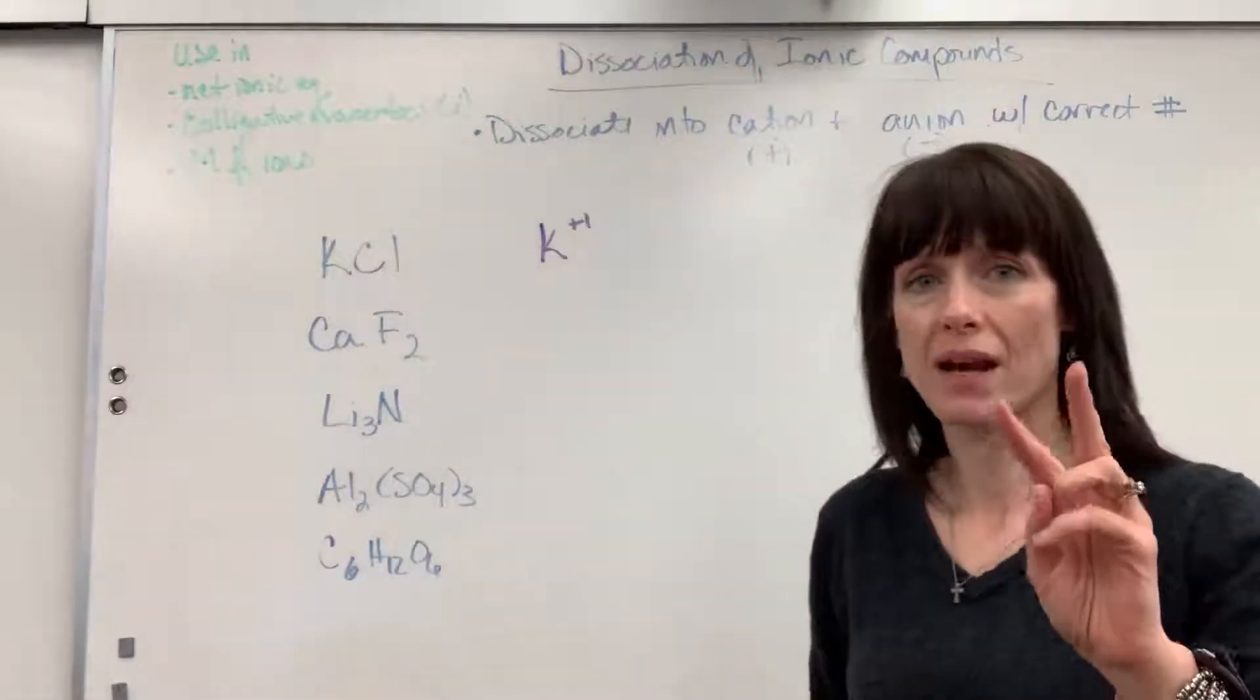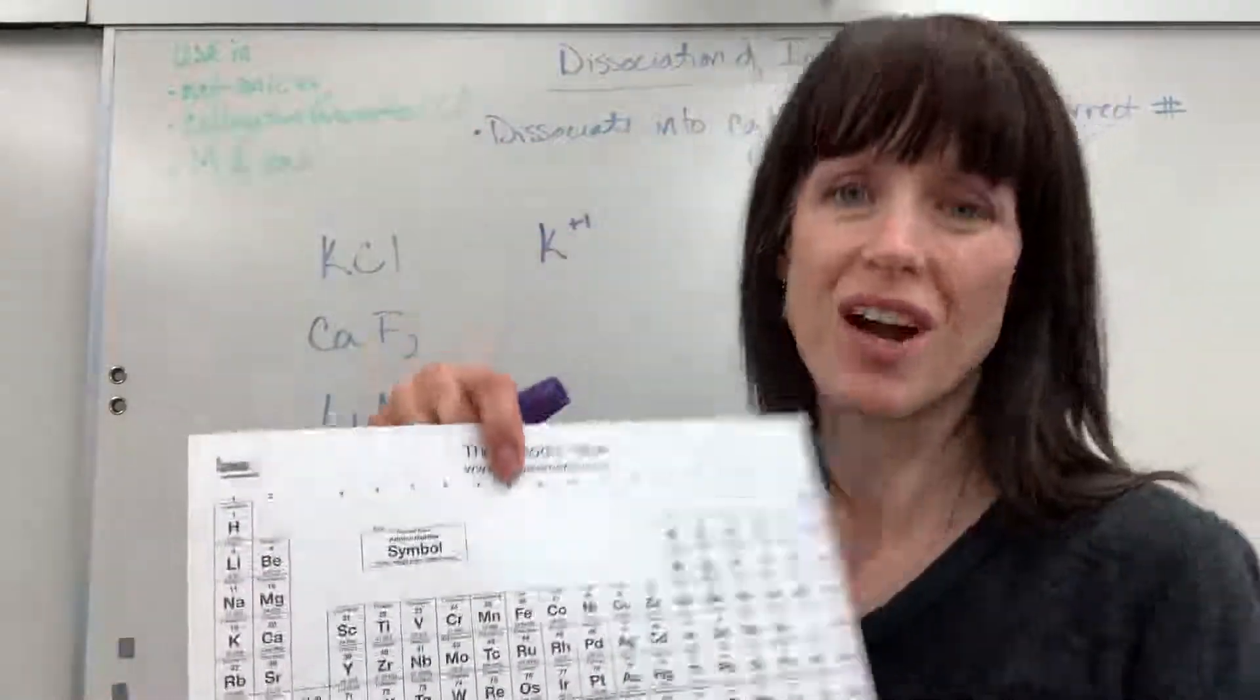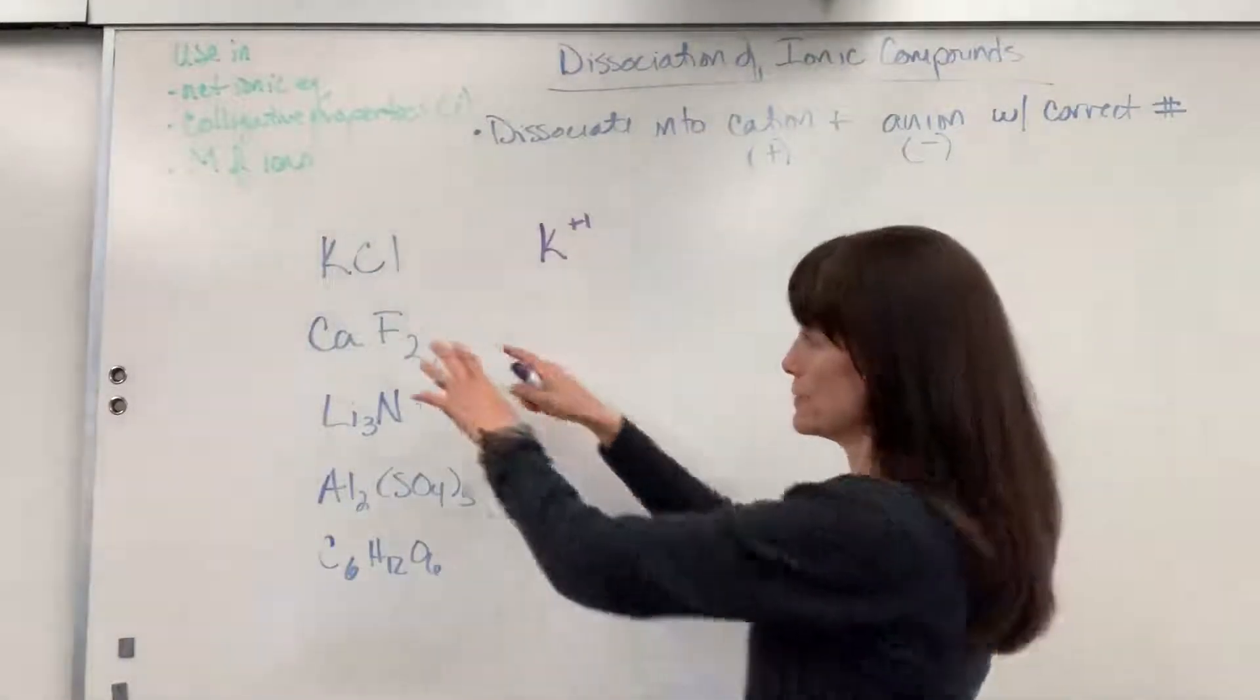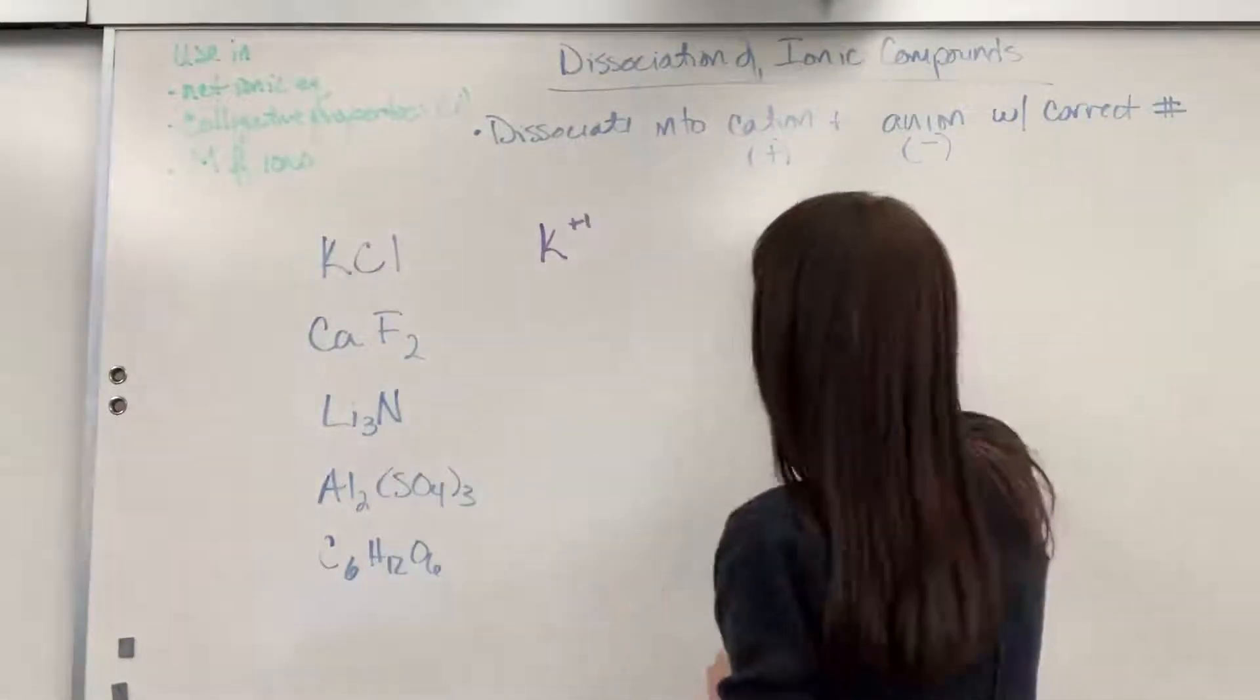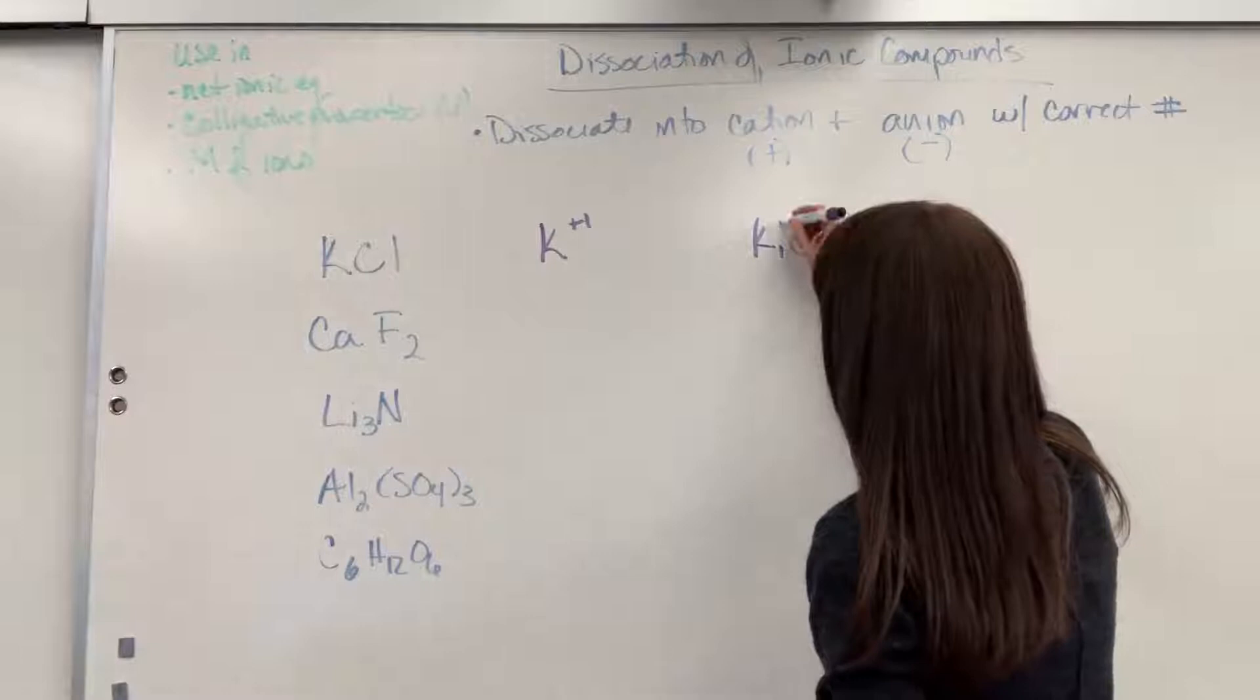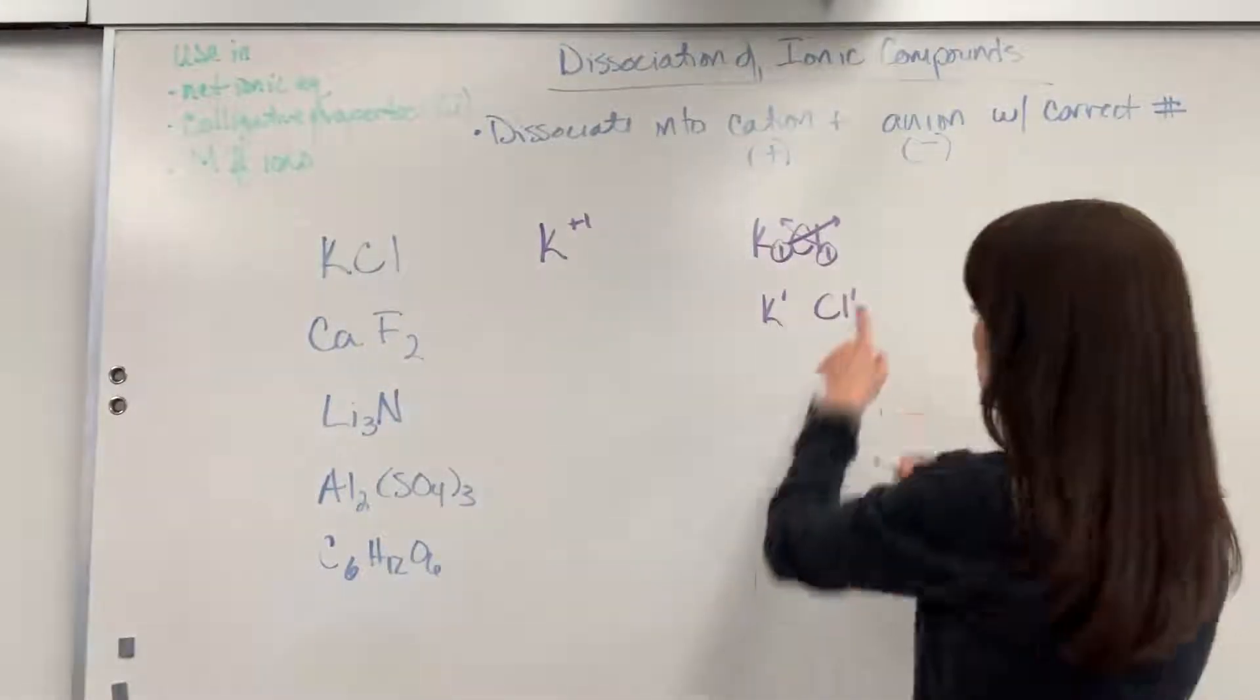Now two ways that I know that. Number one, it's from understanding the periodic table. The potassium right there is a plus one charge. Second way, you can cross the charges or the subscripts back up and those are the charges. So let me show you that. It's understood that calcium has a one and chlorine has a one. I have one calcium, one chlorine. Well if I take those numbers and cross them back up, that means that one was with that potassium and the one was with the chlorine.